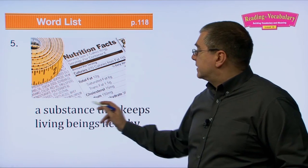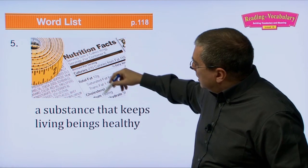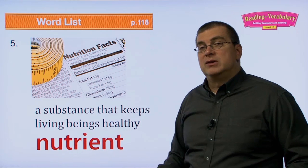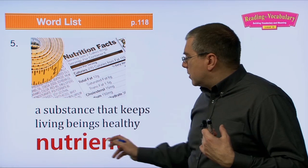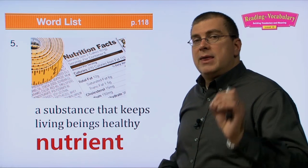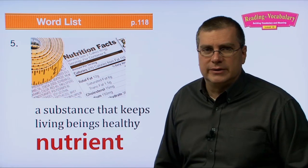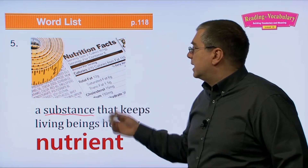Number five: a substance that keeps living beings healthy — that's a nutrient. Nutrition has to do with things we must eat every day to stay healthy, and those individual things are nutrients. You should choose foods with good nutrients. Junk food like hamburgers and French fries don't have many nutrients, while healthy food has lots. These are substances that keep us healthy.